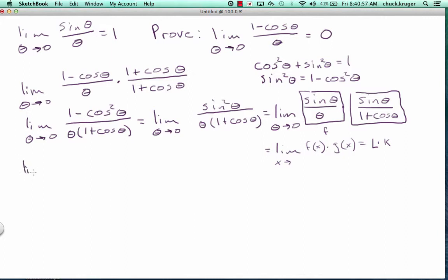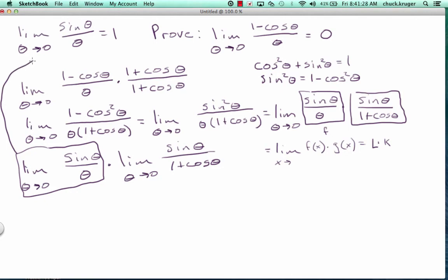In other words, I can write it as two separate limits. The limit as theta goes to 0 of the sine of theta over theta times the limit as theta goes to 0 of the sine of theta over 1 plus cosine theta. Well, this limit right here, we did in a previous video. It's this limit. So this is going to be 1.